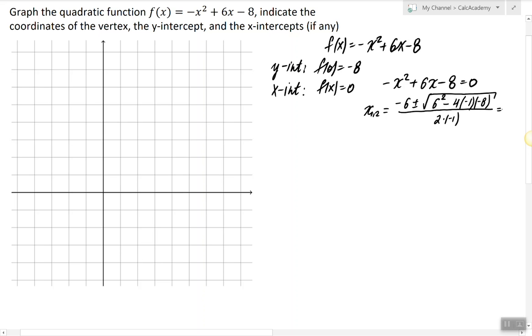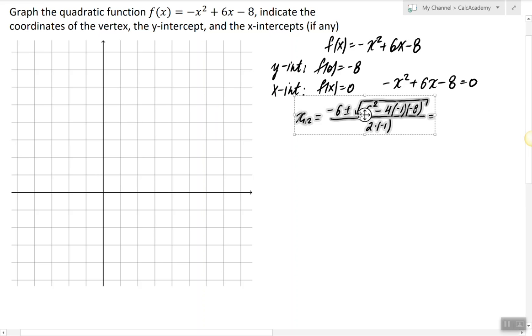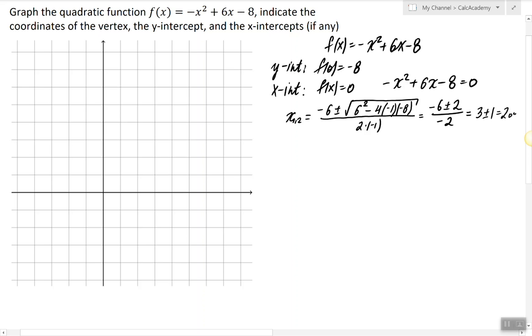In this case it actually seems like we can find the x-intercepts. So we have negative six plus minus square root of four, which is two, over negative two. So we have three plus minus one, which is two or four.